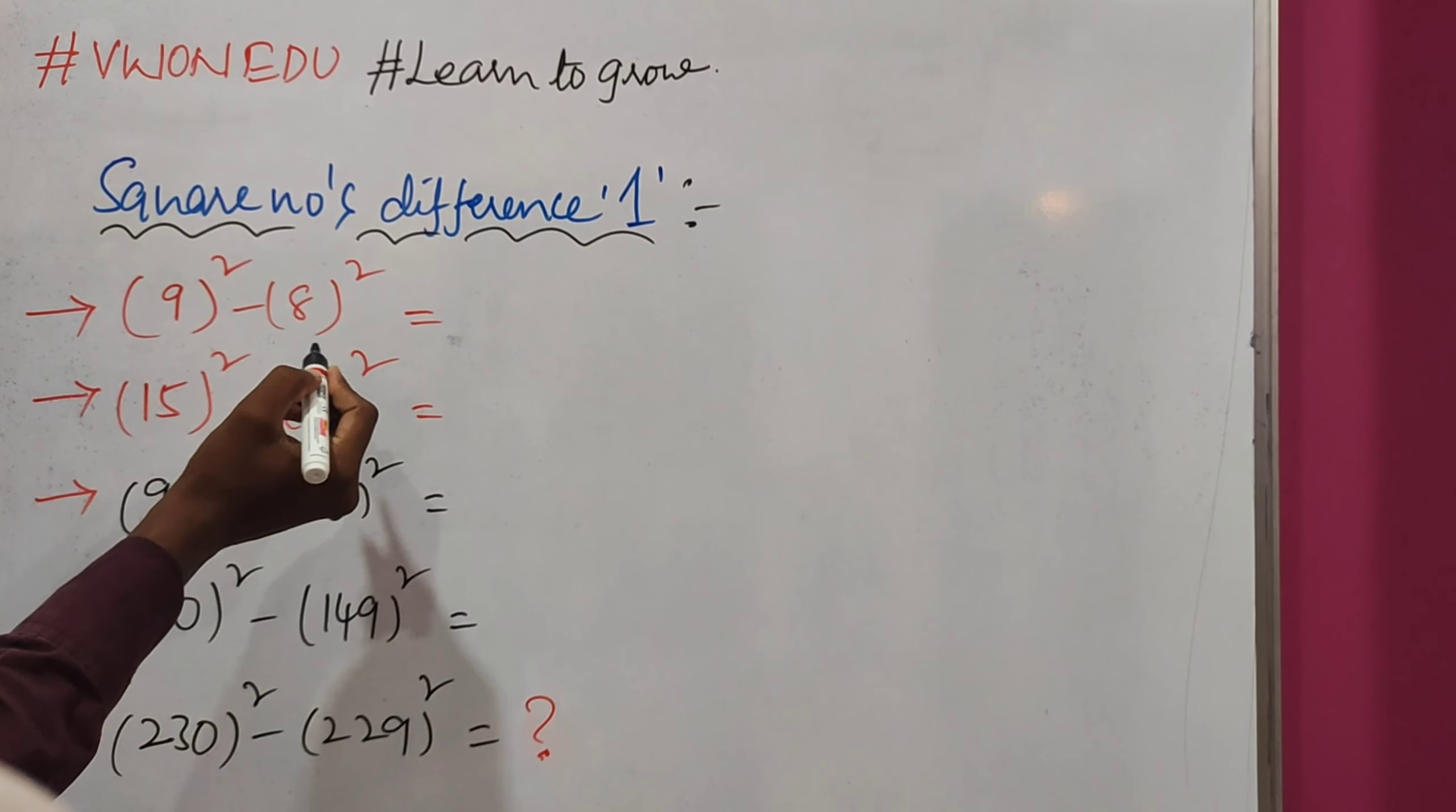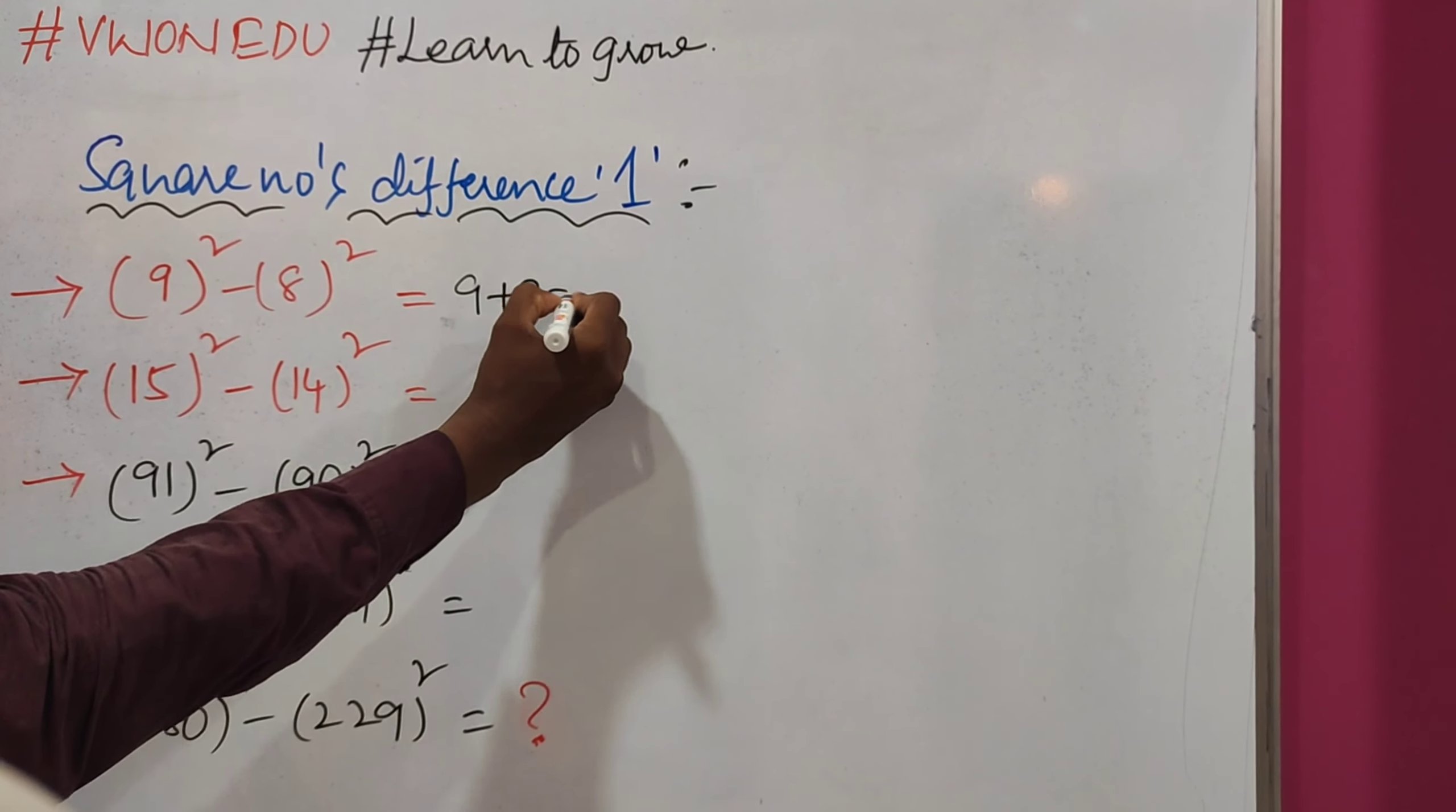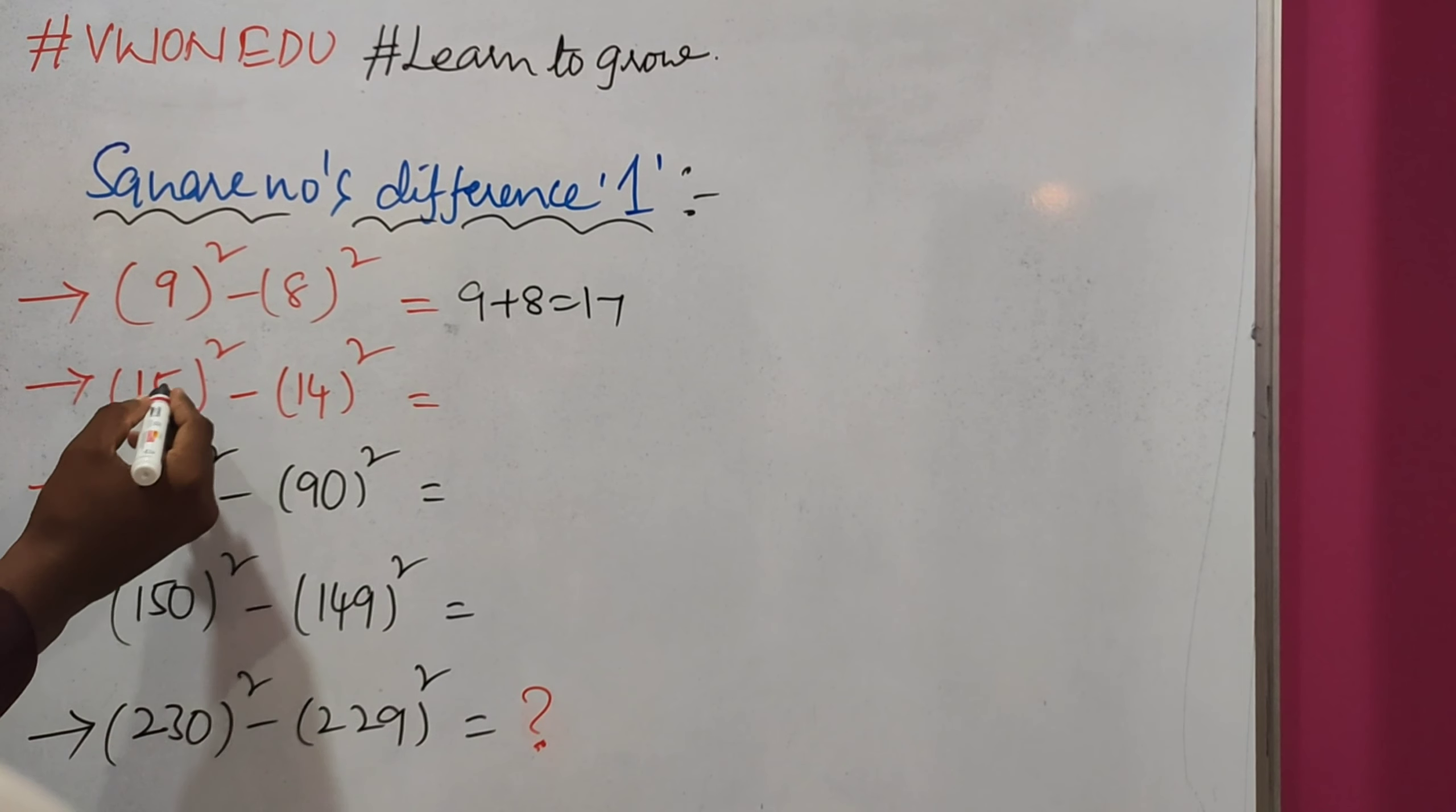9 square minus 8 square, the value is simply 9 plus 8, which equals 17. 15 square minus 14 square: 15 plus 14 equals 29. That is the answer.